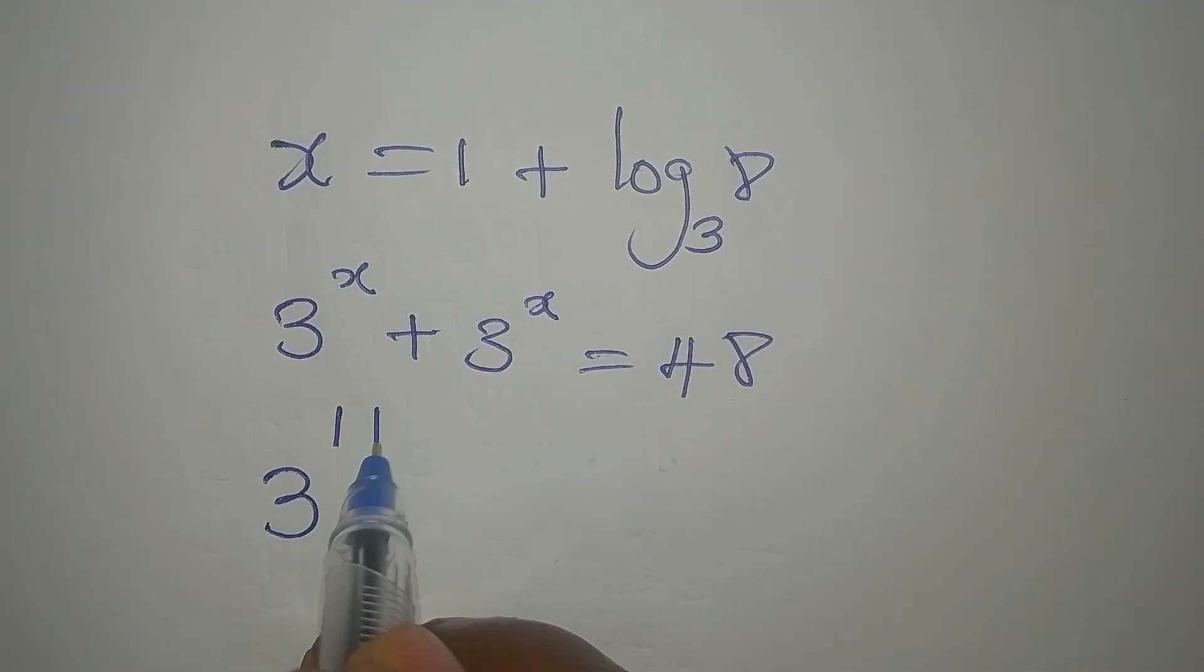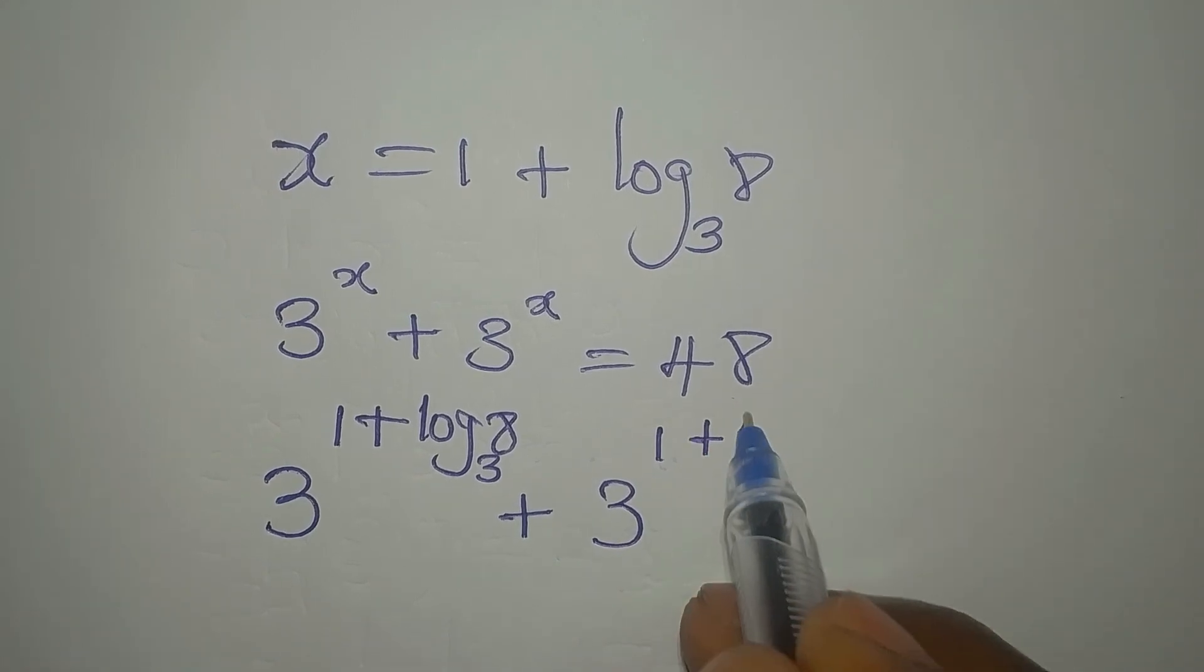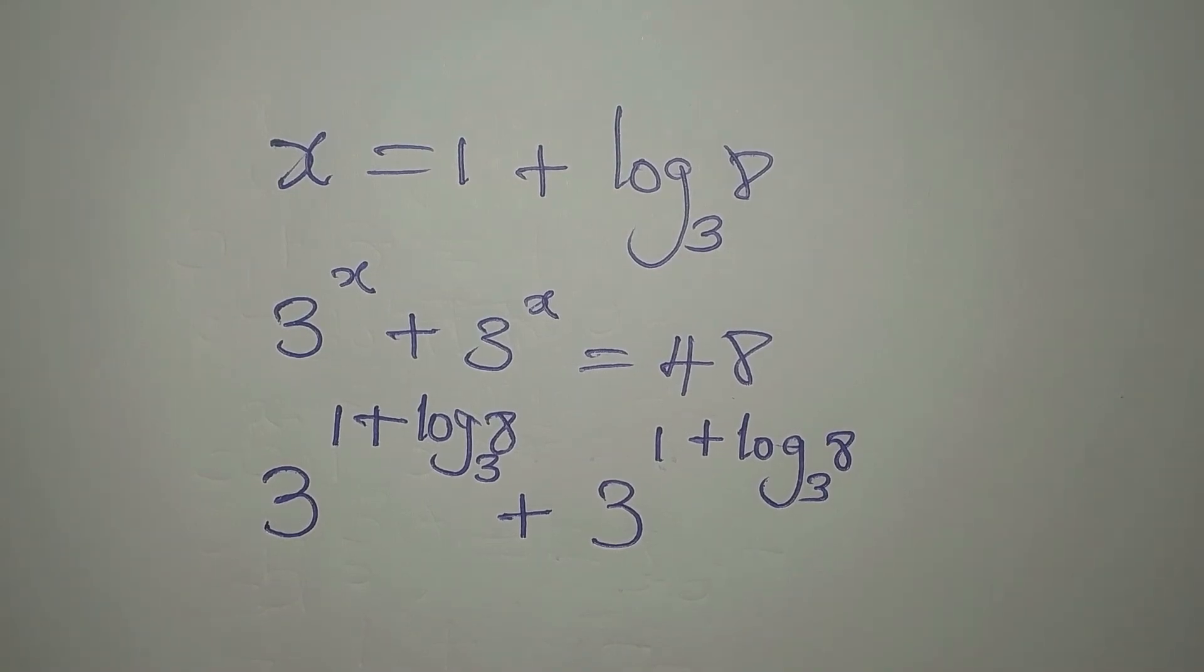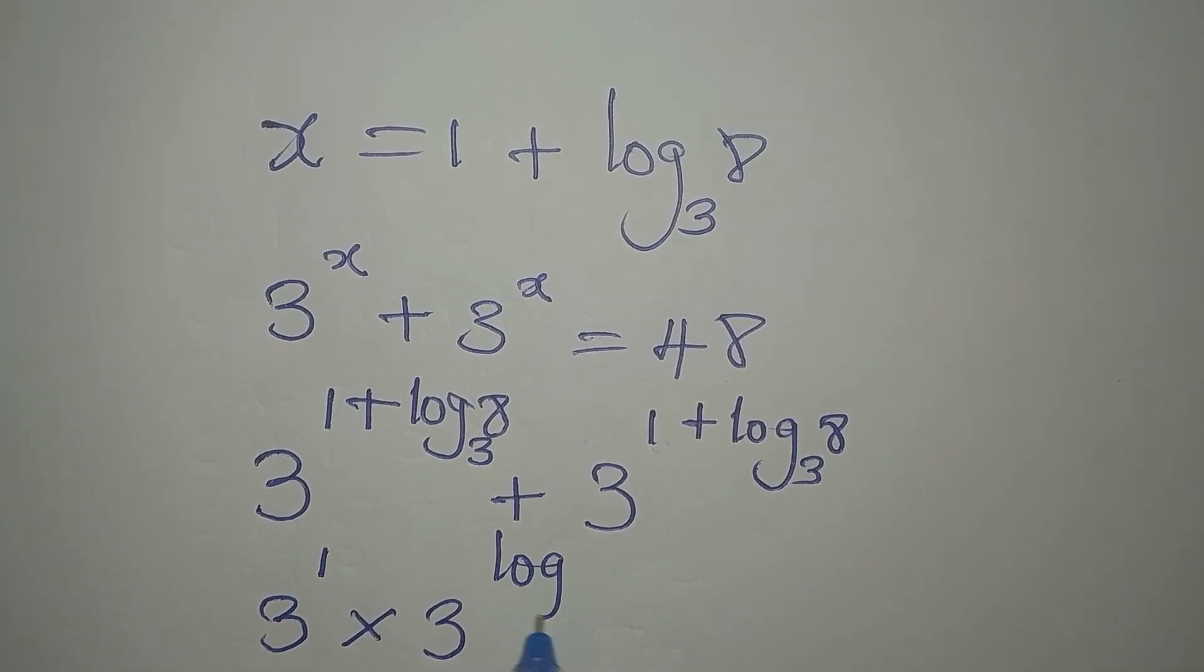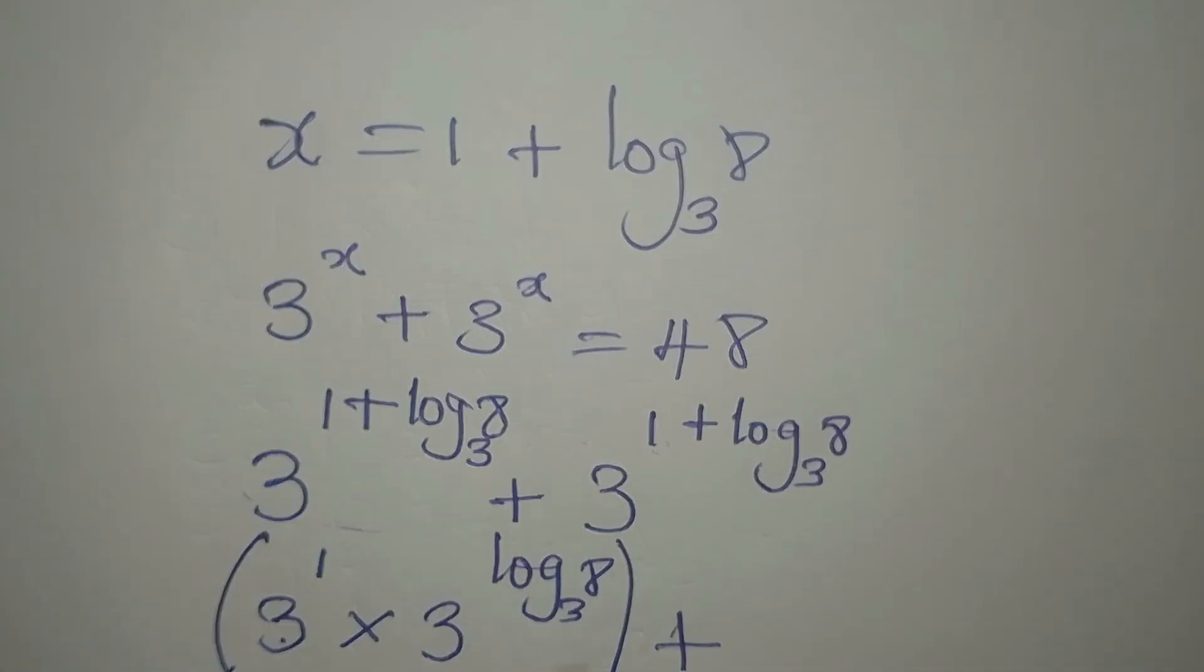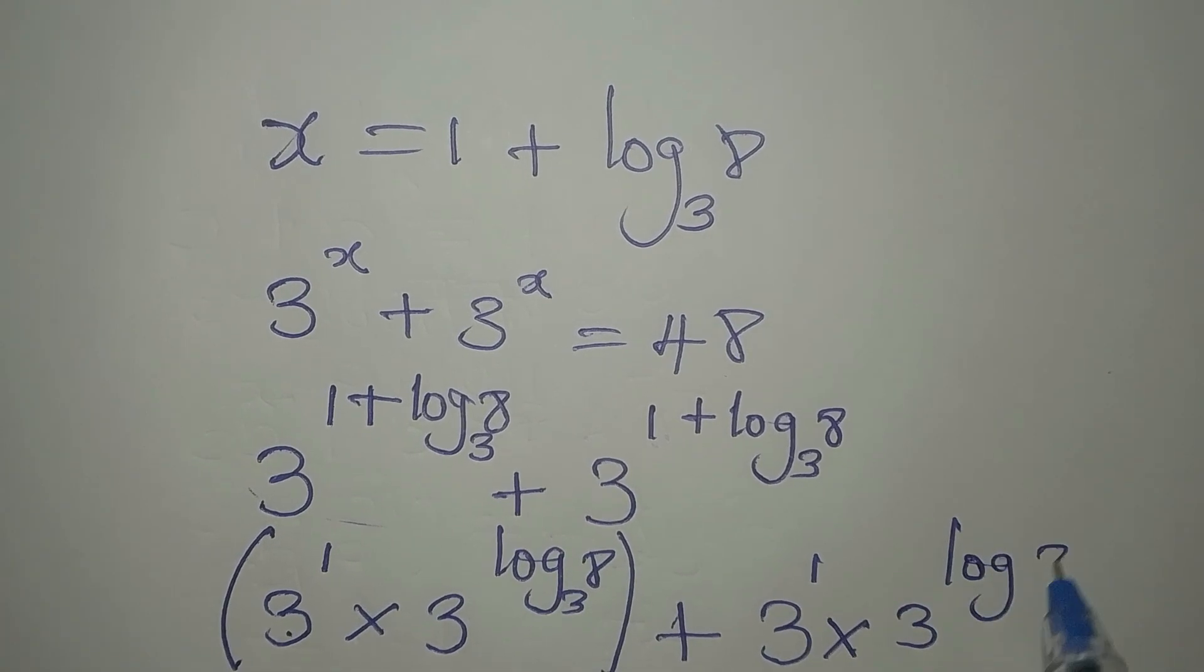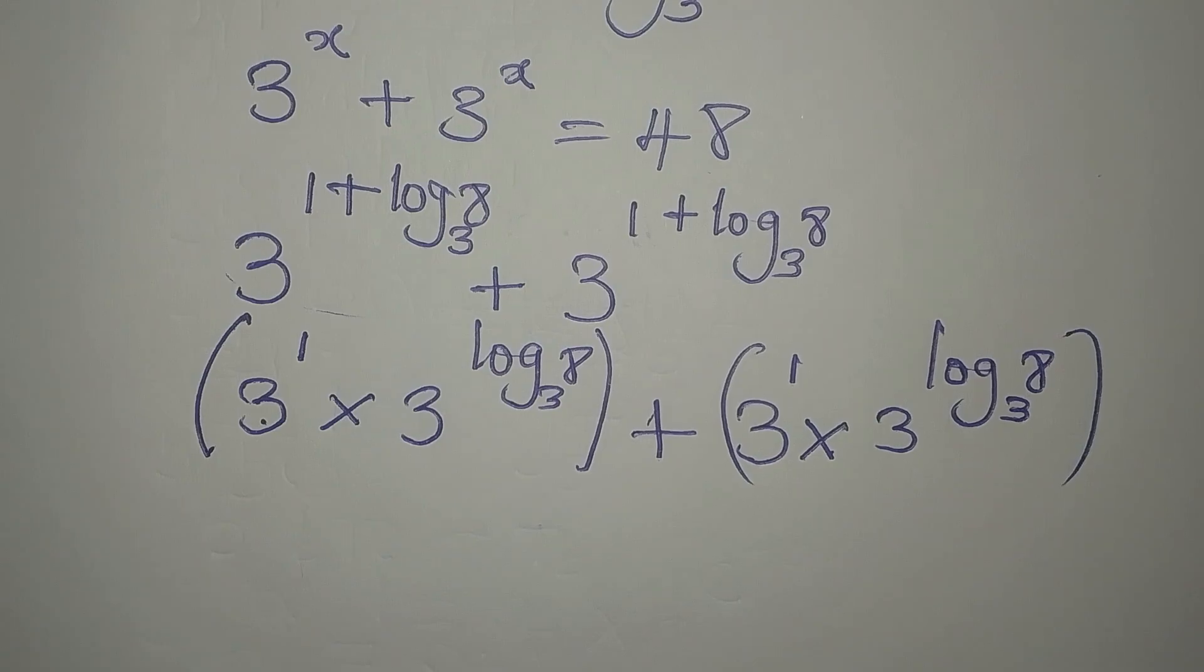So we have 3 to the power of 1 plus log 8 to base 3. Now we apply one of the laws of indices here, so that we have 3 to the power of 1 multiply by 3 to the power of log 8 to base 3. This is for this alone, pick one of the bases, add the powers. Then we have this in two places, so 3 to the power of 1 times 3 to the power of log 8 to the base of 3.